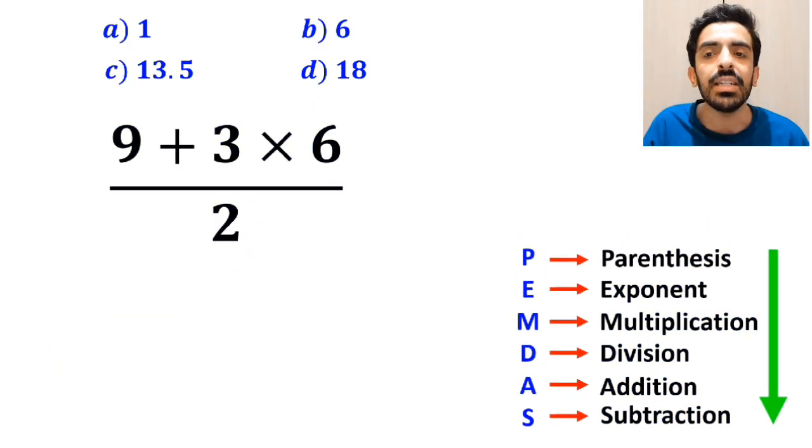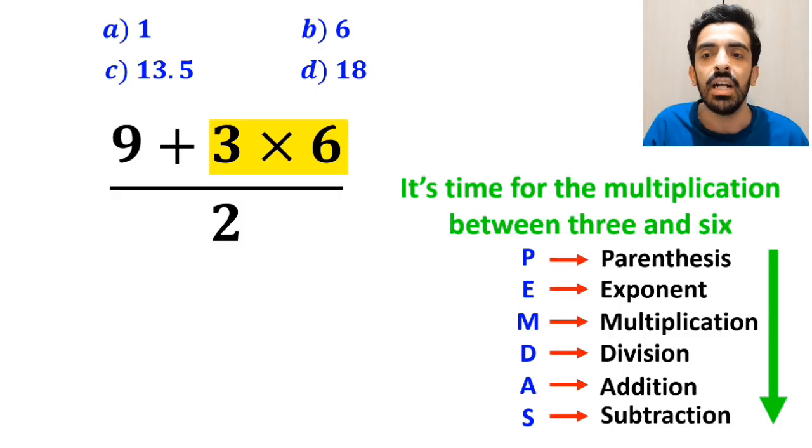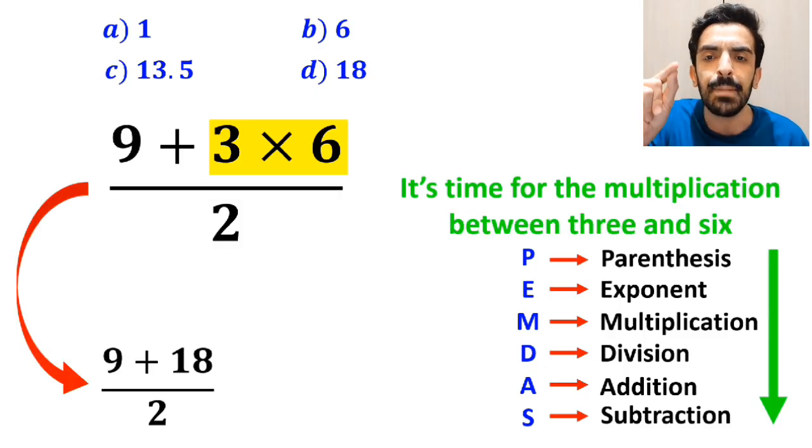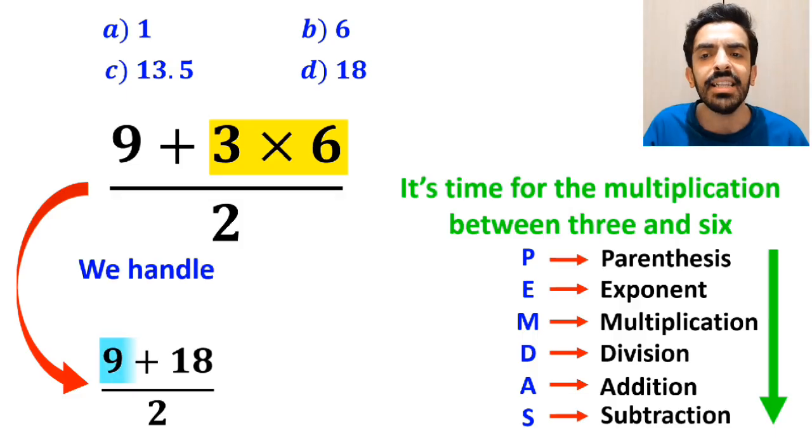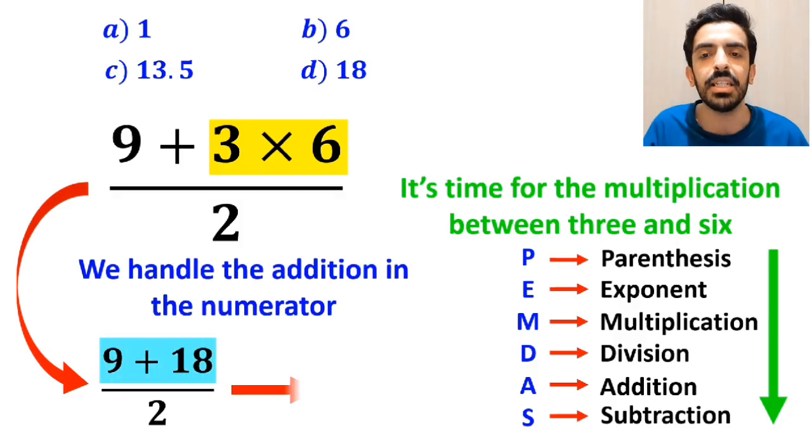In the next step, it's time for the multiplication between 3 and 6, which simplifies this expression to 9 plus 18 over 2. Finally, we handle the addition in the numerator, simplifying this expression to 27 over 2.